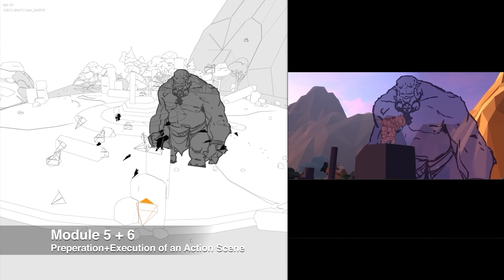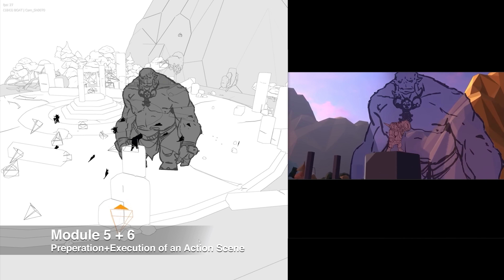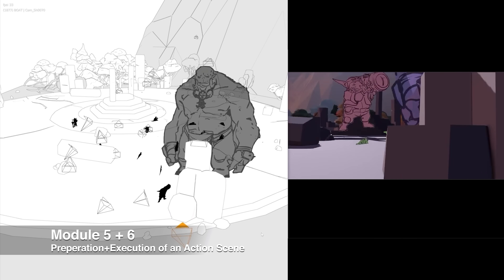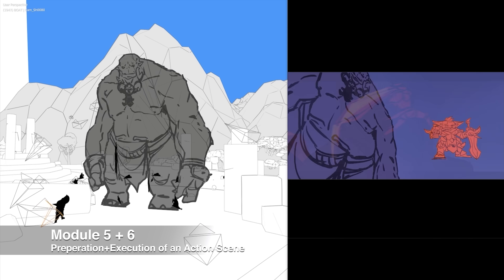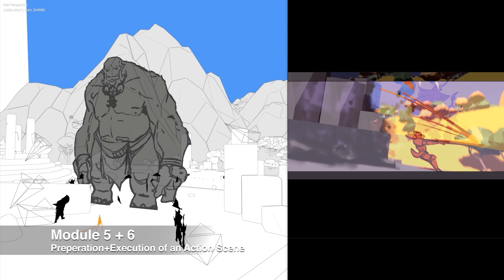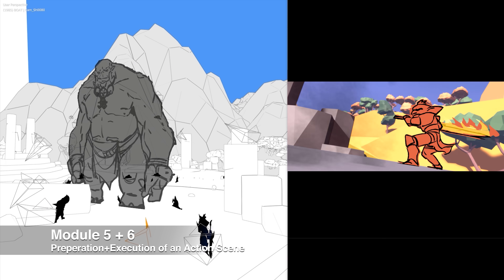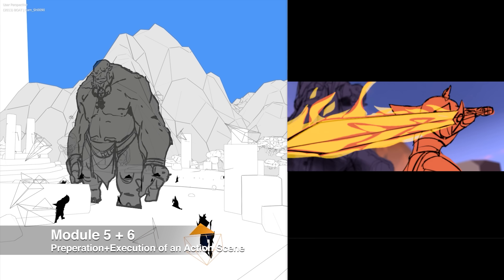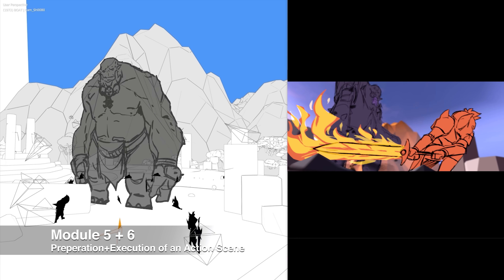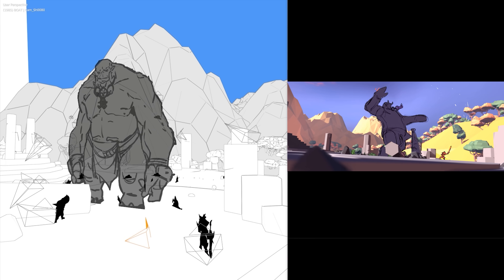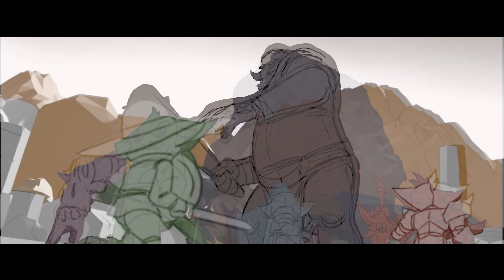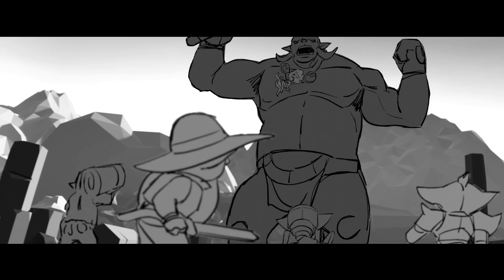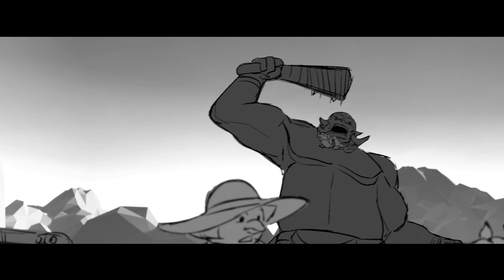Finally in modules 5 and 6 we will increase the complexity, bringing all of the principles we have already learned together to develop and execute a climactic action scene — including action reference breakdowns, thumbnailing, staging and blocking, roughing, revising and polishing the action.